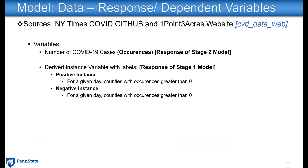Let's look at the data we collected. Obviously, the first thing is the response variable — that is the number of COVID-19 cases, which we define as occurrences. This is the response of our Stage 2 model. Using these occurrences, we created an instance variable with two labels: positive instance and negative instance. For a given day, counties which reported zero occurrences were classified as negative instances, and counties with greater than zero were classified as positive instances.